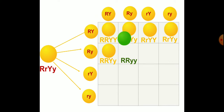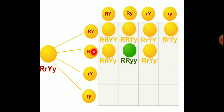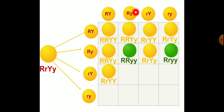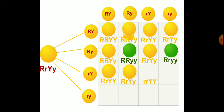The round green combinations: capital R small r, small y small y — capital R gives round shape, small y small y gives green color, so round green. Small r small r, capital Y small y: small r small r gives wrinkled shape, capital Y gives yellow color — wrinkled yellow. Small r small r, capital Y capital Y: wrinkled yellow. Capital R small r, small y small y: round green. Small r small r, capital Y small y: capital R gives round, small Y gives green — round green. Small r small r represents the wrinkled shape. Wrinkled yellow.